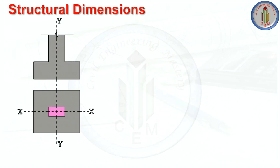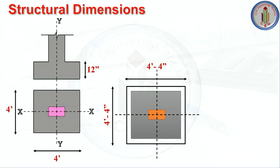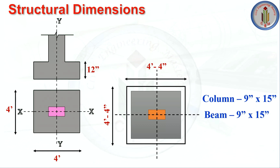Let's look at the structural dimensions. The footing size is 4 feet by 4 feet with a depth of 12 inches. The excavation size is 4 feet 4 inches by 4 feet 4 inches. Column size is 9 inches by 15 inches, and slab thickness is 5 inches.